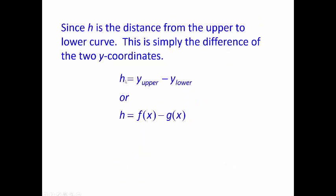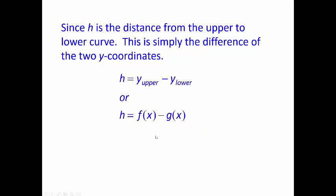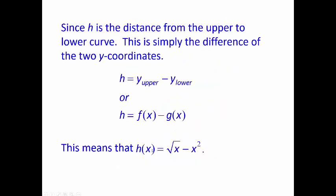So h, the height, is y-upper minus y-lower. You take the top y-value and subtract away the bottom y-value. Or, our top curve is f(x) minus our bottom curve g(x). So h(x) — going back, the top curve was the square root of x, and the bottom curve was the parabola — so it's the top curve, the square root of x (the blue), minus the bottom curve, which is x squared. That's our height.